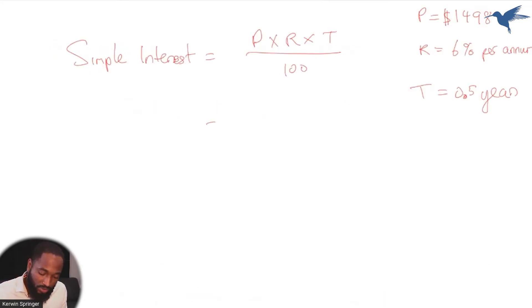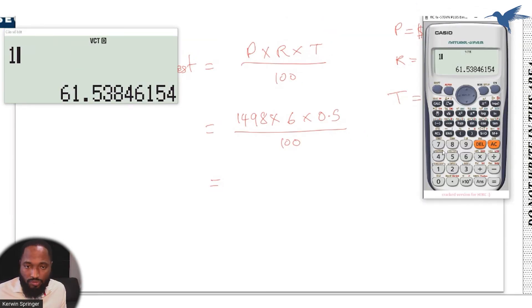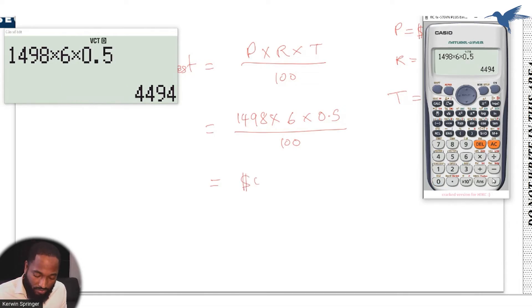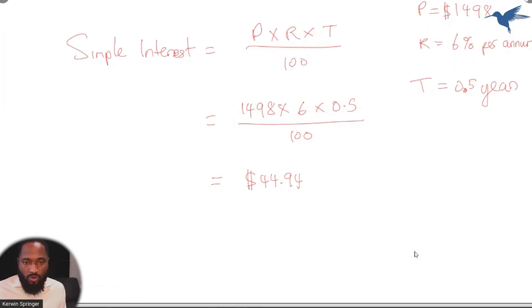So if I am to look at the simple interest, I will substitute those numbers. P was that, R was this, T was this. Divide everything by 100 and hope for the best. What number are y'all getting? So I have 1498 times 6 times 0.5, and if I divide that by 100, I'm getting $44.94.